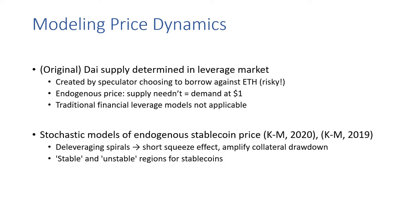We develop stochastic models of what this endogenous stablecoin price actually looks like, and it leads to what we call deleveraging spirals, which cause short squeeze effects and amplify collateral drawdown in these systems, and also lead to stable and unstable regions for these stablecoin systems.